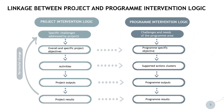On this visualization, you see on the left-hand side the project intervention logic and on the right-hand side the program intervention logic. There needs to be a very clear linkage and consistency between the project and the program intervention logic. For example, the overall and the project specific objectives need to clearly contribute to the program specific objective. The project activities need to be consistent with the supported actions as foreseen in the program document. The project outputs need to contribute to the program outputs, and the project results need to be consistent with and contribute to the program results.